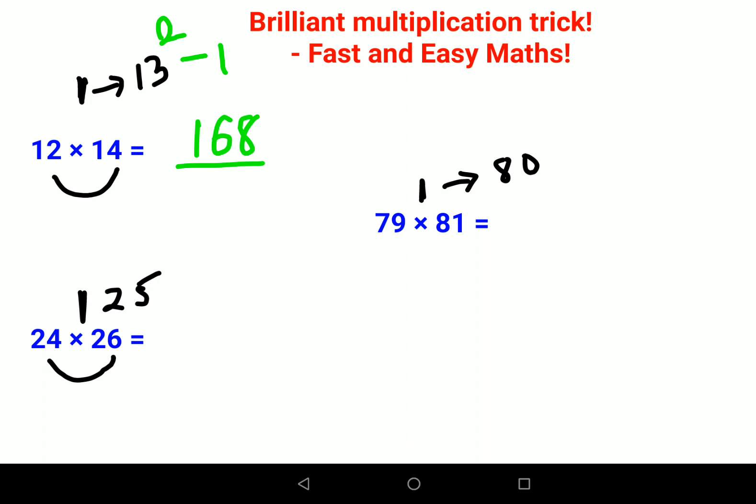Similarly, here you have 25. So 25 square, you know that is nothing but 625. Subtract one from 625, the answer is going to be 624. That is your answer for this multiplication.